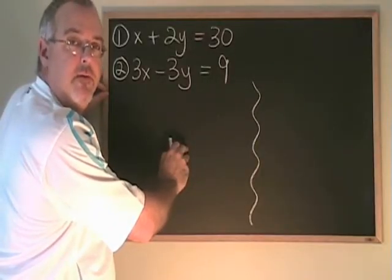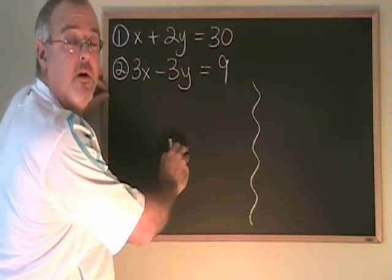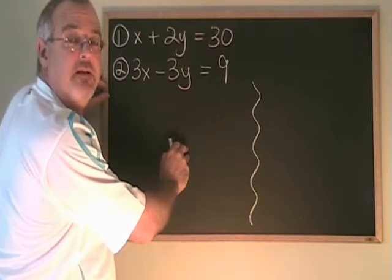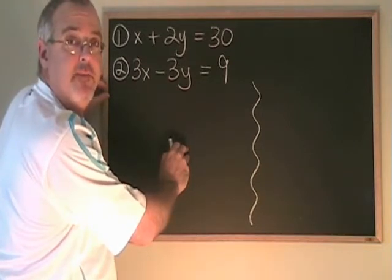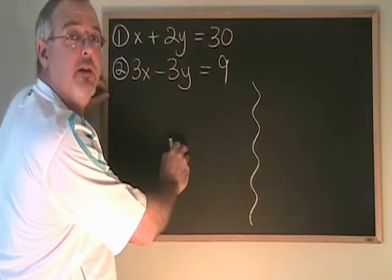In all three of my examples so far, I have been making the y's equal and opposite and eliminating the y's. But will I get the same answer if I try to make the x's equal and opposite instead? Let's do the previous example over again, but this time we'll work with the x's.